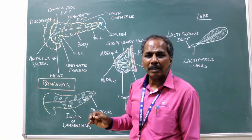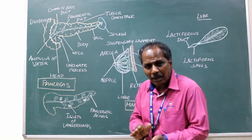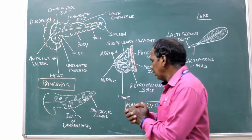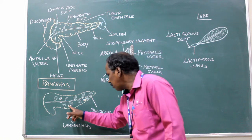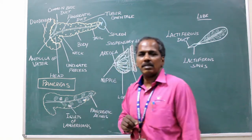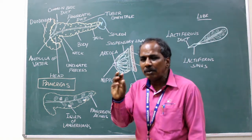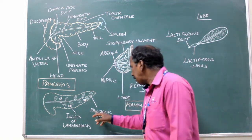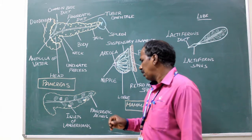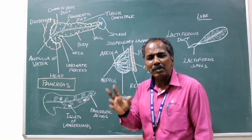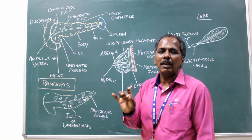Histology or structure of the pancreas: since it is both an exocrine and endocrine gland, it has two parts — one is the pancreatic acinus, which is the exocrine part, and the other is the islets of Langerhans, which is the endocrine part. The pancreatic acini contain acinar cells with zymogen granules. The islets of Langerhans contain alpha, beta and delta cells.